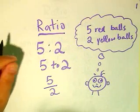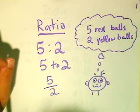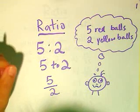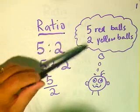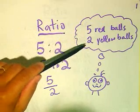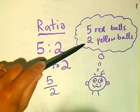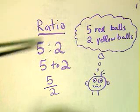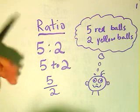Today you'll be learning about ratio. Ratio is actually an important mathematical concept. For example, let's say you have five red balls and two yellow balls. How would you write that in terms of ratio numbers?